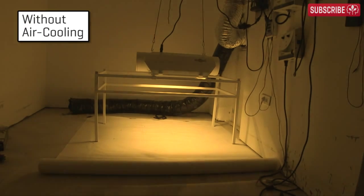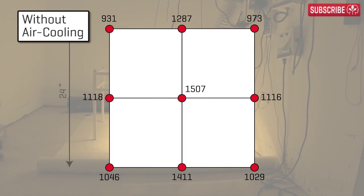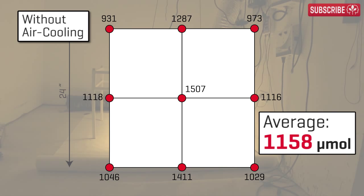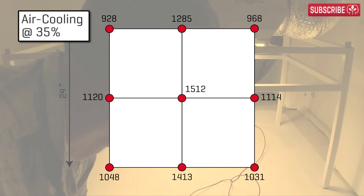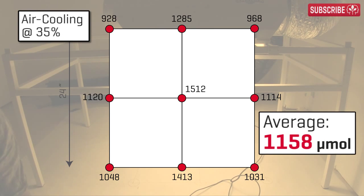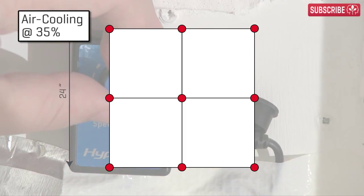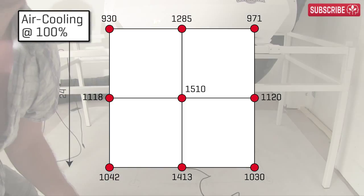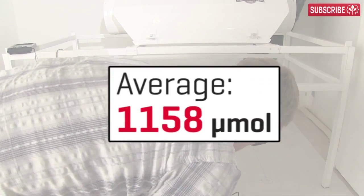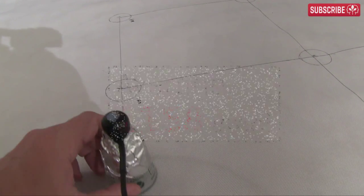The results? With no air cooling, the average PAR reading was 1,158 micromoles. At 35% fan speed, the average PAR reading was the same, 1,158 micromoles. And at 100%, it was still 1,158 micromoles. BAM!